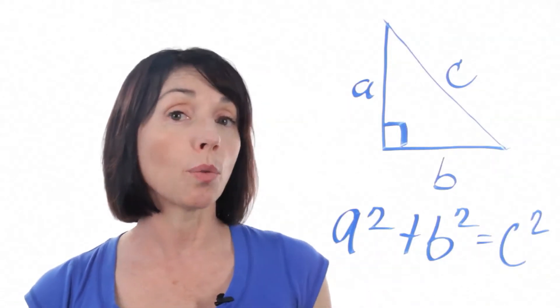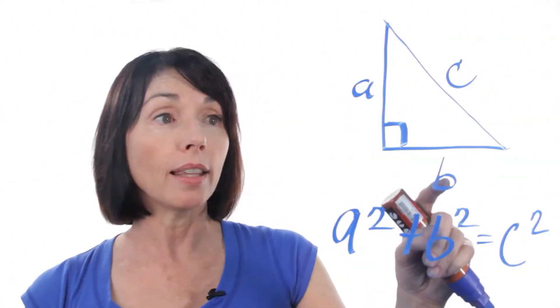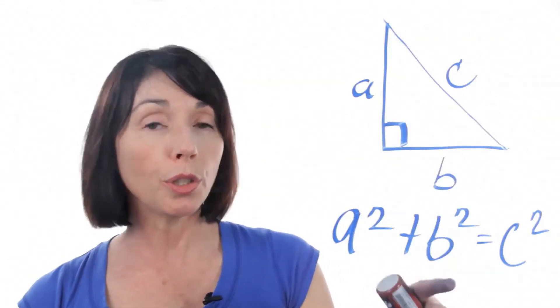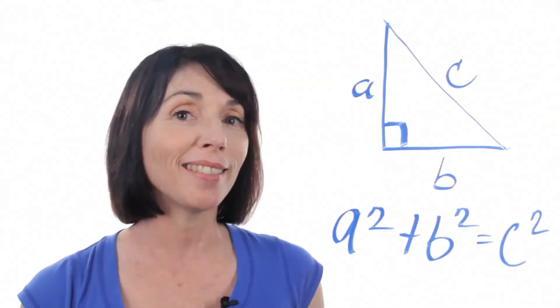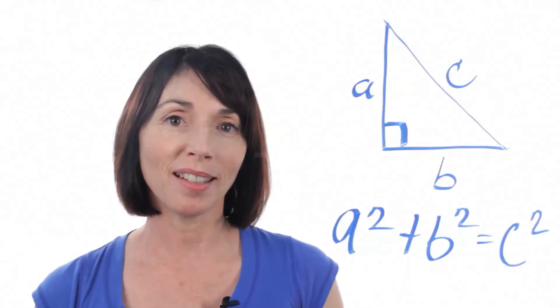But what this means is that for a right triangle, if you know the length of any two of the sides, you can use the Pythagorean Theorem to find the length of the third. And that's the Pythagorean Theorem.